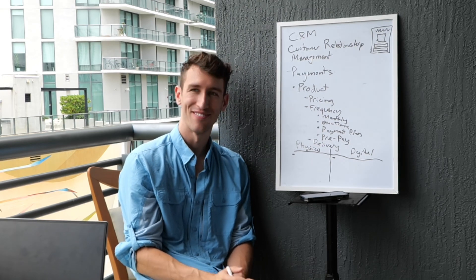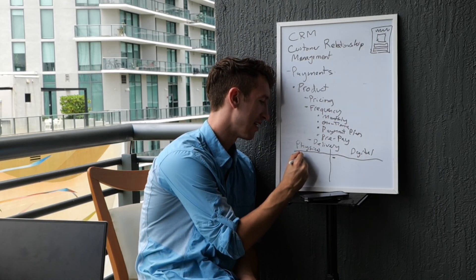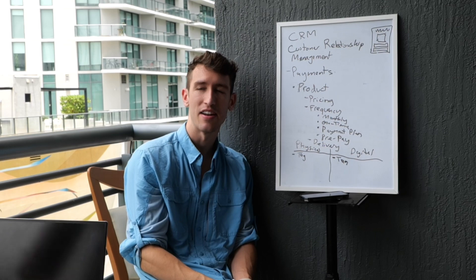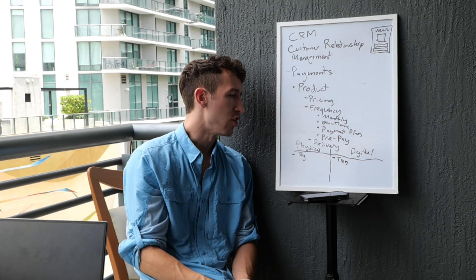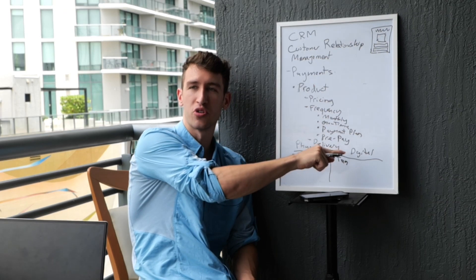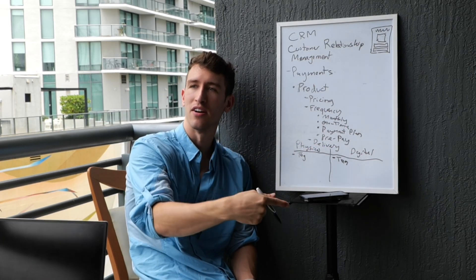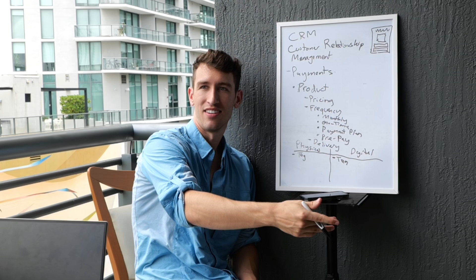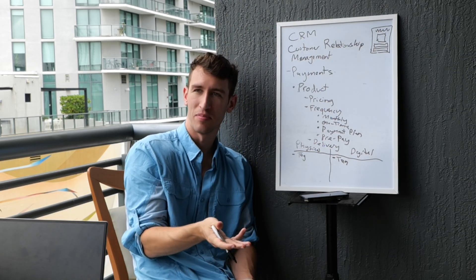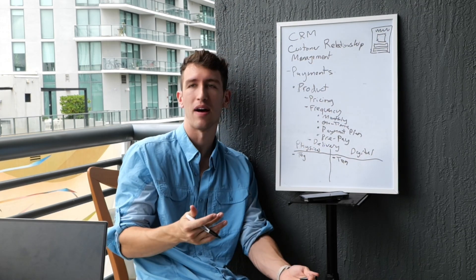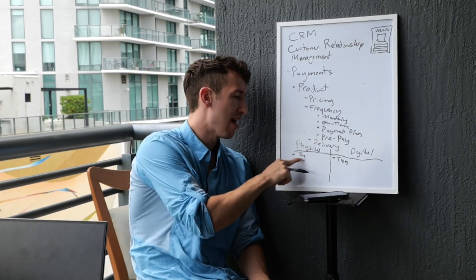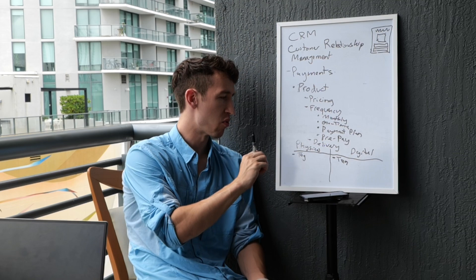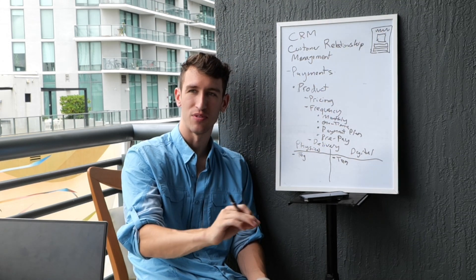What action do we need to take right after they purchase that identifies them as a buyer? A tag. So you always want to have a tag, because this way, if you're running automated marketing, you don't want someone that just purchased your digital or physical product to continue to receive emails to go buy the thing they just bought. You want tags to build automation so that when they receive the tag, they are removed from the sequence.